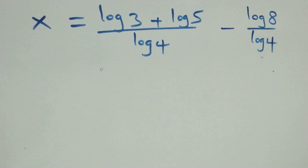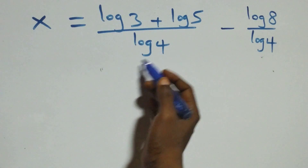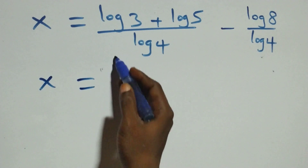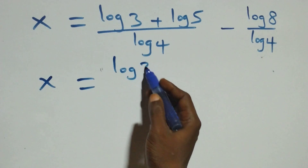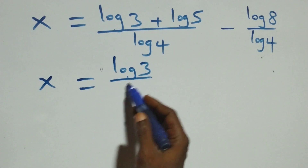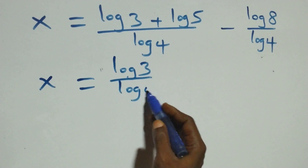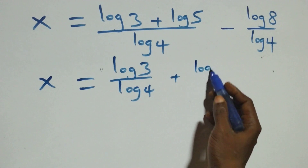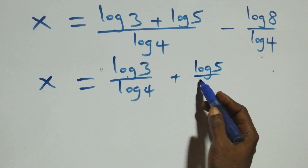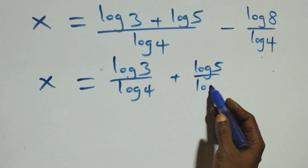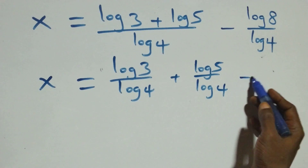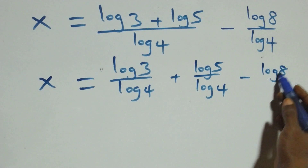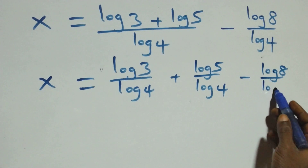Then next step: we separate this into two fractions, and we have x equals log 3 over log 4 plus log 5 over log 4 minus log 8 over log 4.